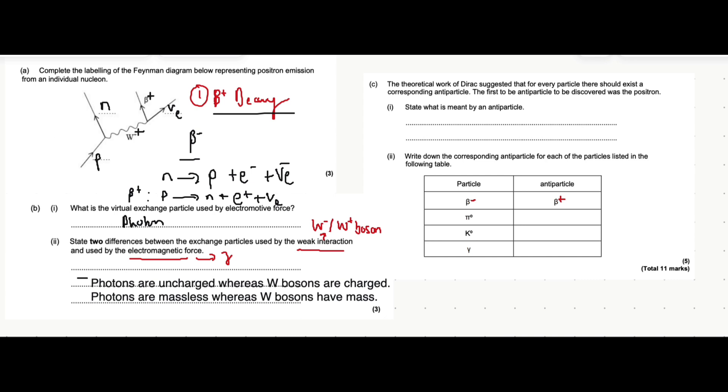Moving on to part C, it's asking state what's meant by an antiparticle. So I'm just going to bring a text box out and give you a model definition for that. A particle and its corresponding antiparticle have the same rest mass or same rest energy. Either one of those is fine to mention, but they're oppositely charged.